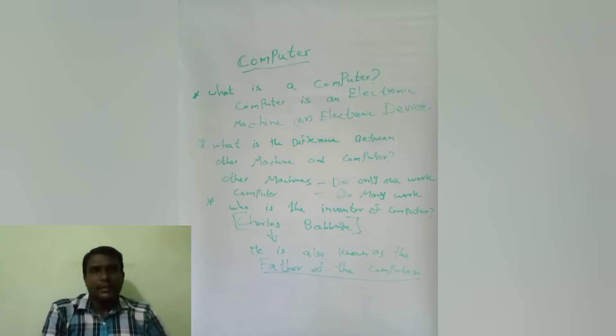What is the difference between other machines or other devices and computers? Other machines or other devices can do only one thing or one work at a time, but the computer can do many things or many works at a time. That is the reason why the computer is used always in our life nowadays.